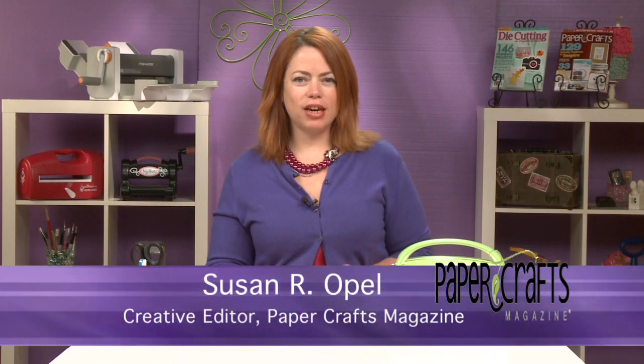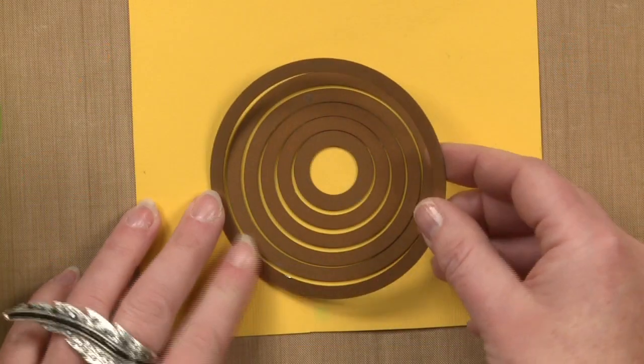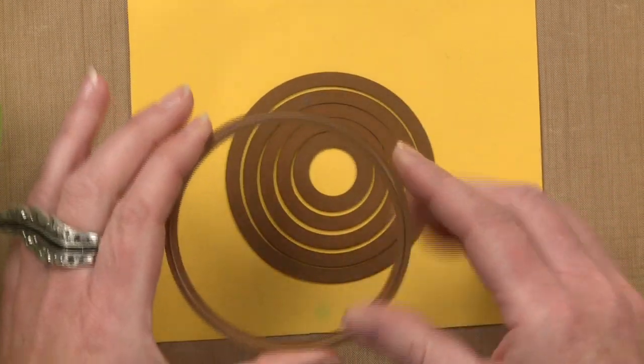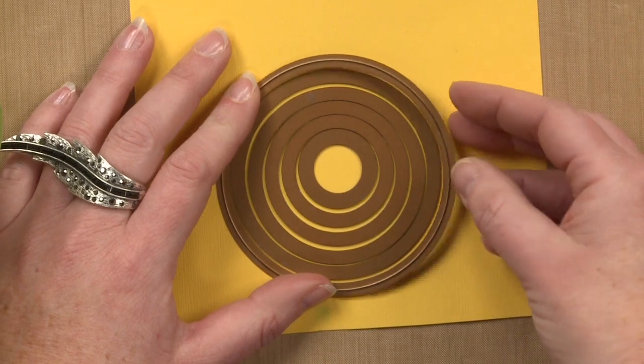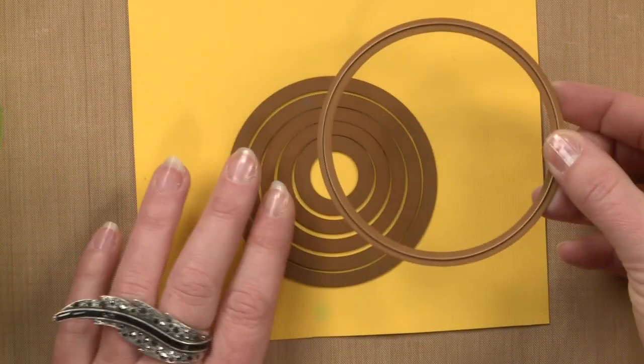Die cutting can open a whole world of possibilities and here's another great technique that you can try. Dies can come in lots of different ways. These are steel rule dies and as you can see they nest all together.